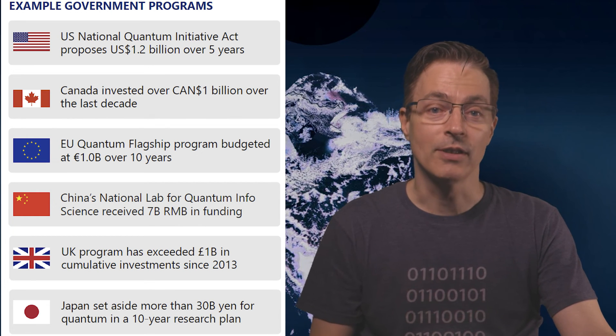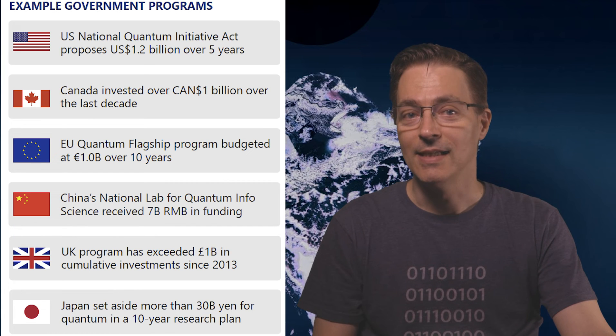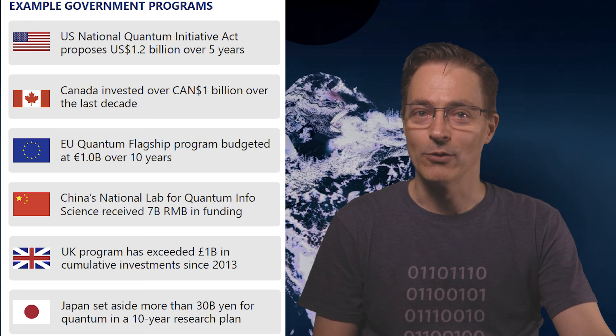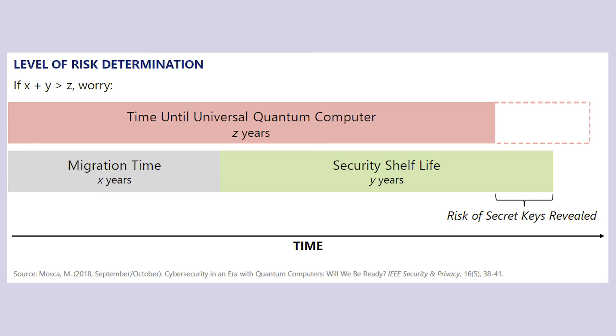So this is one of my favorite charts, an inequality that says, if x plus y is greater than z, well, then you need to worry. Of course, they're referring to the time that it may take to develop a quantum computer that's powerful enough to crack the current encryption schemes. X plus y is not greater than z just yet. So don't worry.